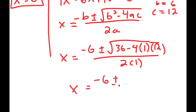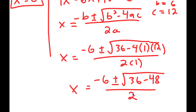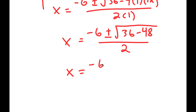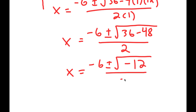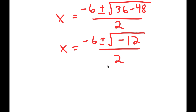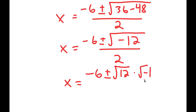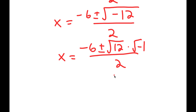This is equal to negative 6 plus or minus the square root of 36 minus 48 over 2, which is equal to negative 6 plus or minus the square root of negative 12 over 2. From here, that's the square root of 12 times the square root of negative 1. And the square root of negative 1 is the imaginary number i.